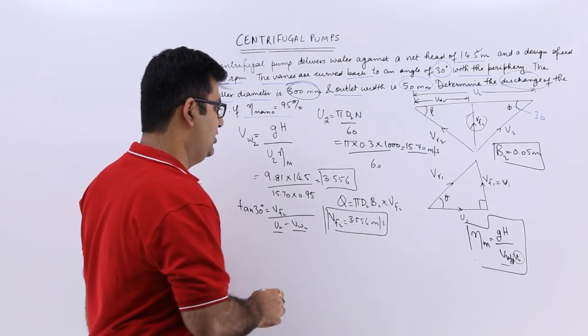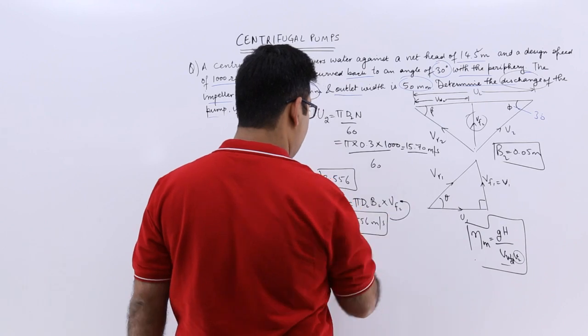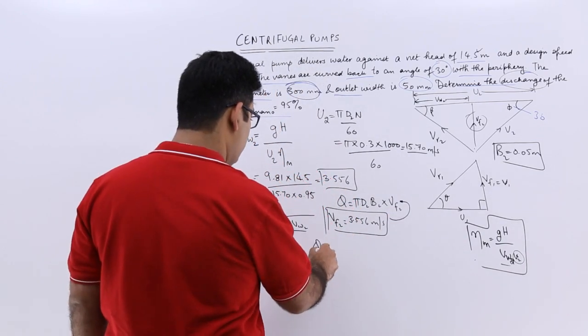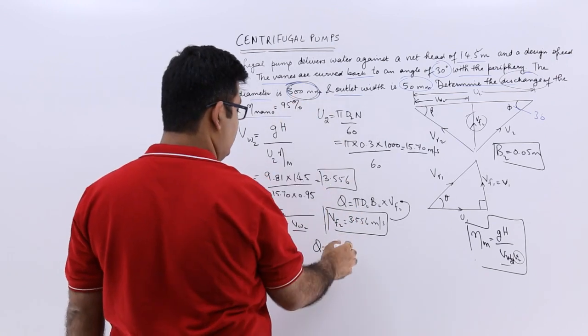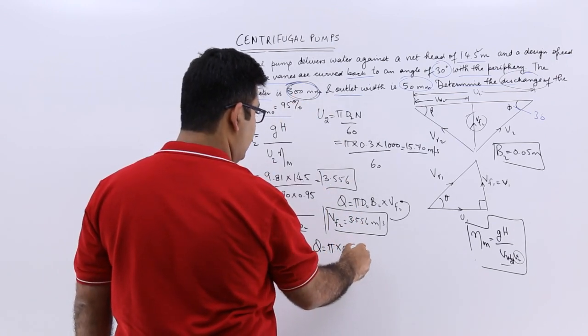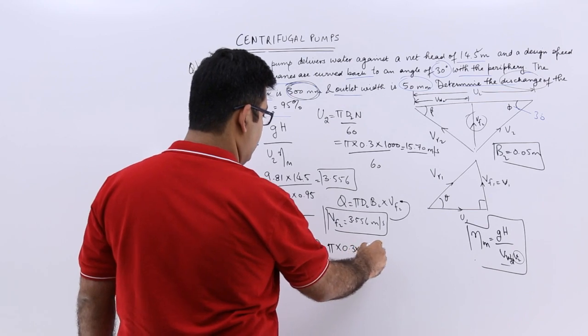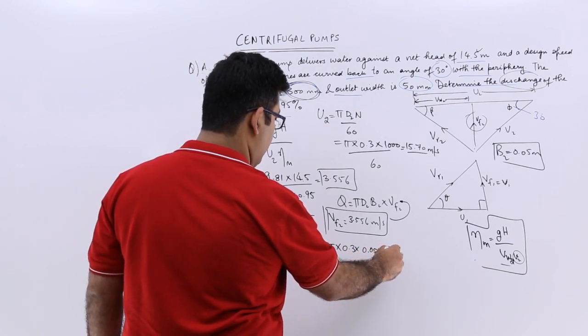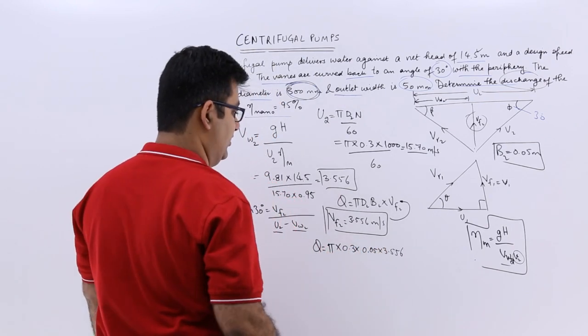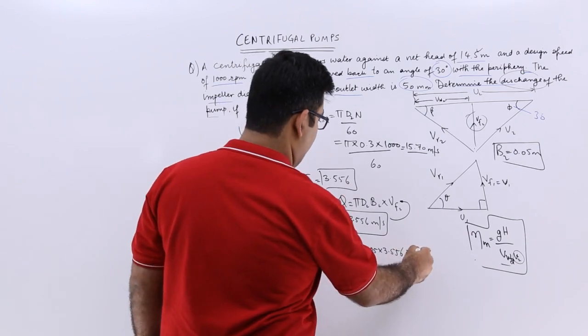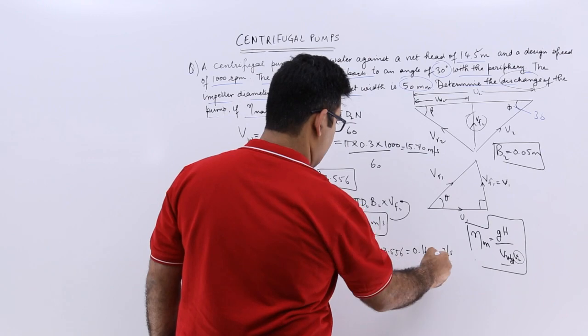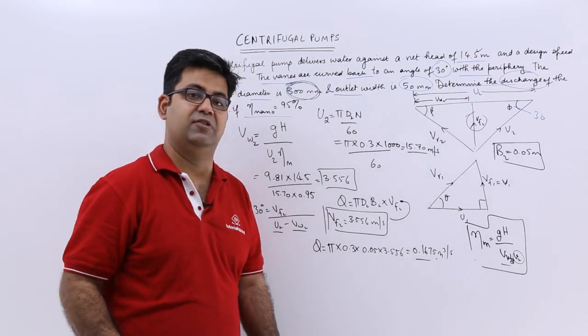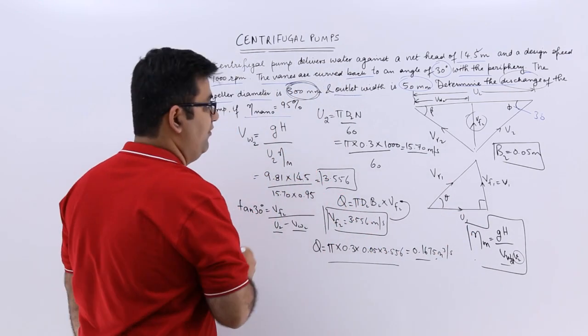Okay, now let us put this value in this and you will get Q as pi into D2. D2 is how much? D2 is 300 millimeters which is 0.3 meters into B2 it is 0.05 into 6.956. So Q comes out to be 0.1675 meter cube per second. So that is the discharge value we are looking for.